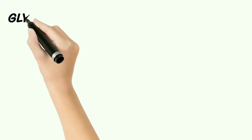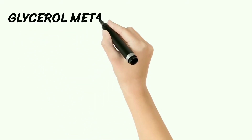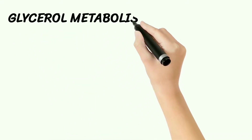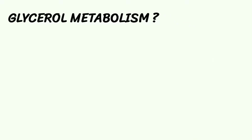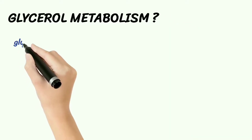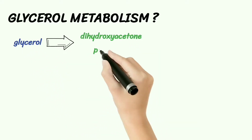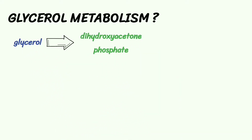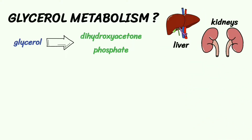Hello there. In this video, I will explain glycerol metabolism. Glycerol metabolism is the conversion of glycerol to dihydroxyacetone phosphate. Glycerol metabolism occurs in the liver and kidneys.